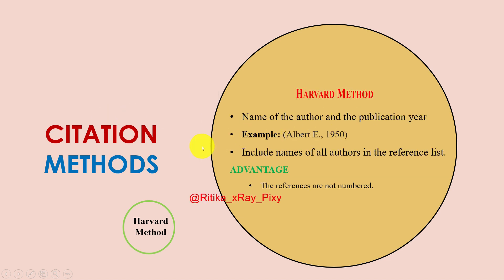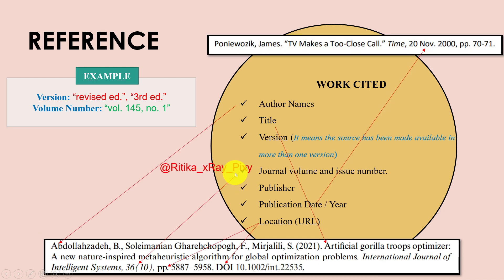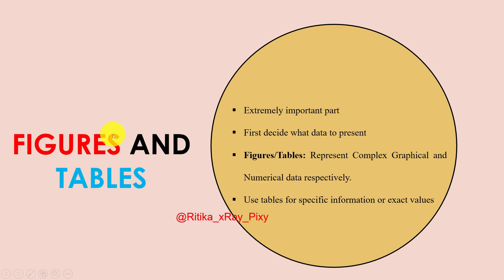The Harvard method includes the author name and publication year. An advantage is that no numbering is required. In the references, give the following details: author name, the year when the paper was published, research paper title, conference title, volume and page number. For citation we need: author name, title, version, journal, volume, issue, and publication date.